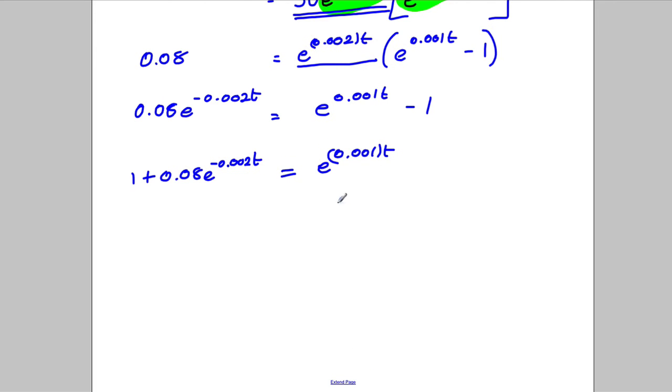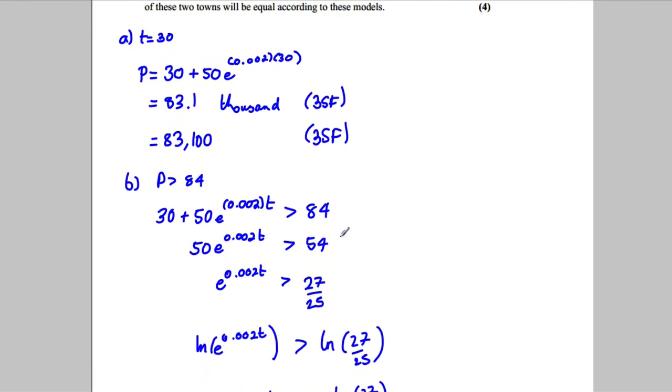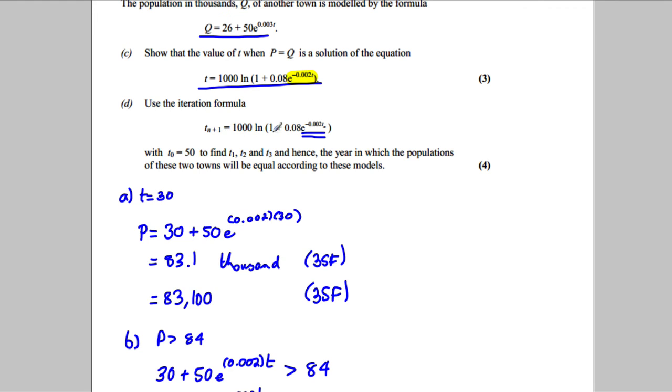Then I take logarithms of both sides, so I get 0.001 T is going to be equal to the natural logarithm of 1 plus 0.08 e to the negative 0.002 T, like that. And then this is 1 over 1,000, so if I times both sides by 1,000, 1,000 natural logarithm 1 plus 0.08 e to the power of negative 0.002 T is going to be equal to T. And I think that's what we've got in our formula. We have that T is equal to 1,000 logarithm 1 plus 0.08 e to the negative 0.002 T.